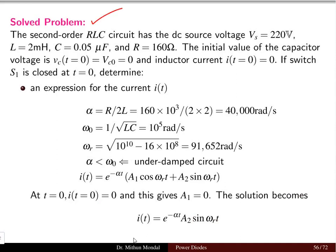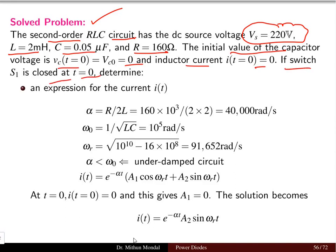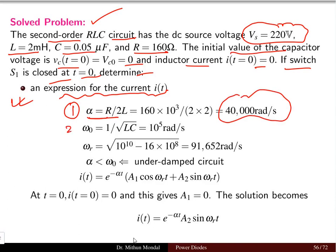Let us solve a problem. For a second order RLC circuit: DC source voltage = 220 V, inductor L = 2 mH, capacitor C = 0.05 µF, resistor R = 160 Ω. Initial conditions: capacitor voltage V_C0 = 0 and inductor current = 0. The switch is closed at t = 0. We determine alpha = R/2L = 40,000 rad/s, and omega_0 = 1/√(LC) = 10⁵ rad/s.